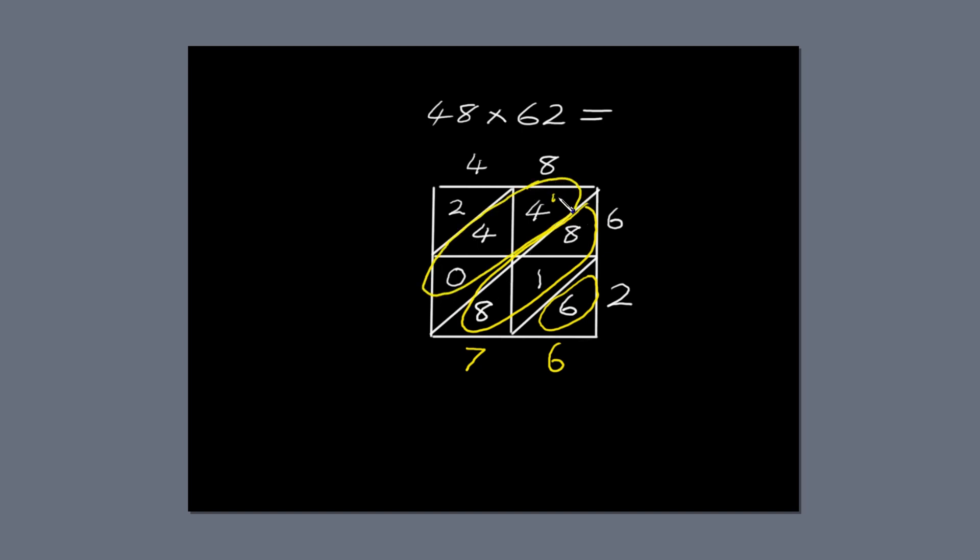1 plus 4 is 5, plus 4 is 9. This time, write 9 next to the diagonal. The last diagonal only has one number in it, the number 2. So write 2 next to the diagonal. Now, just read off the answer.